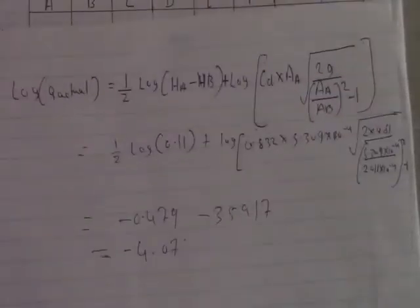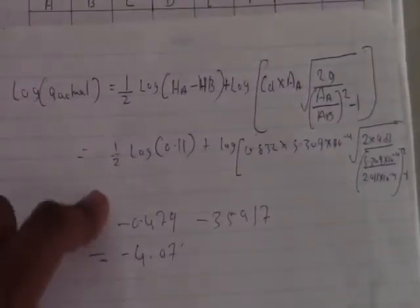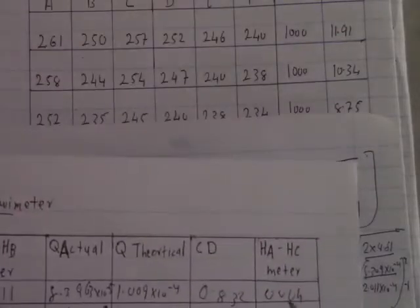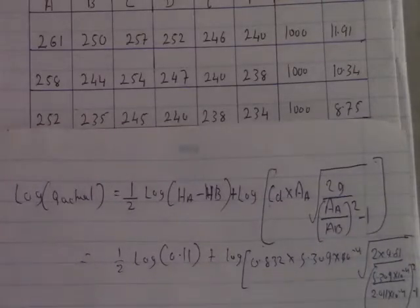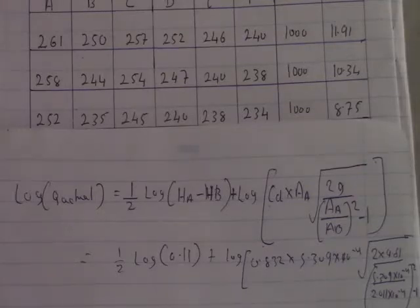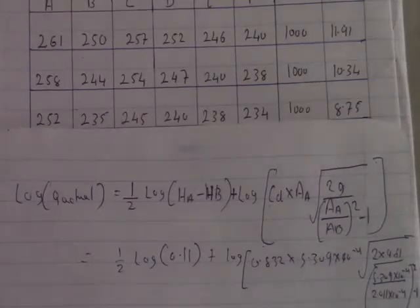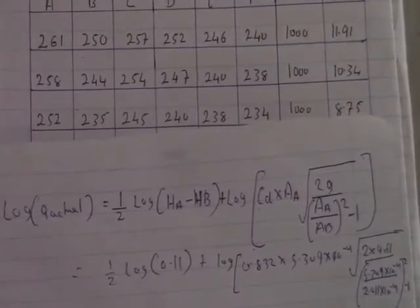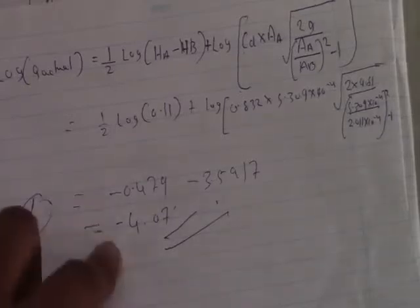Calculating for test 1: ½ × log(0.011) gives −0.479. The second part: log [0.832 × 5.309 × 10⁻⁴ × √(2 × 9.81 / ((5.309 × 10⁻⁴ / 2.011 × 10⁻⁴)² − 1))] gives −3.5917. Adding both parts: −0.479 + (−3.5917) = −4.0107. So the log Q actual for test 1 is −4.0107. The same procedure is repeated for tests 2 through 6.